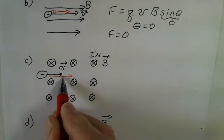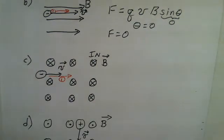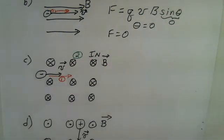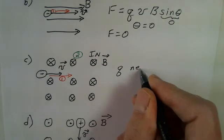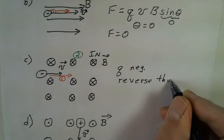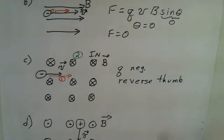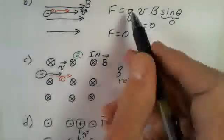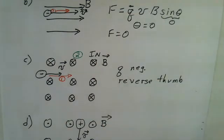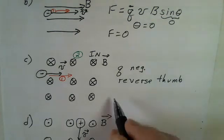With the right-hand rule, I start with my fingers in the direction of the velocity, then rotate my wrist so I can easily bend my fingers in the direction of the magnetic field. I find that my thumb would be pointing up the page. But that's not the final answer — because Q is negative, I must reverse the direction of my thumb. Whenever the charge is negative, I must reverse the direction of my thumb, as implied by the equation: if the charge is minus, we get a minus result.